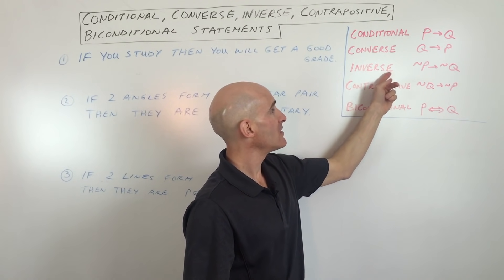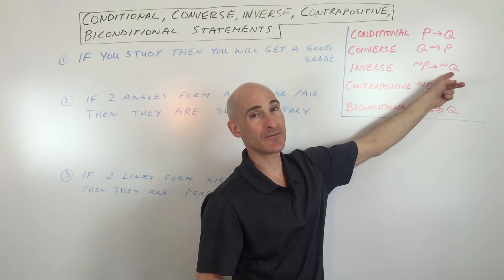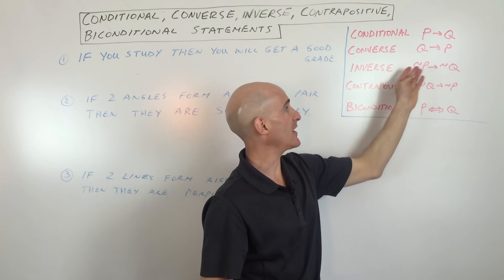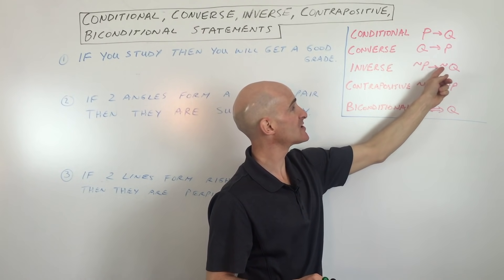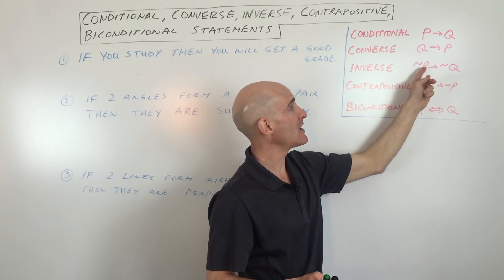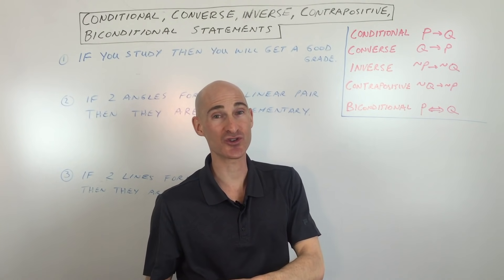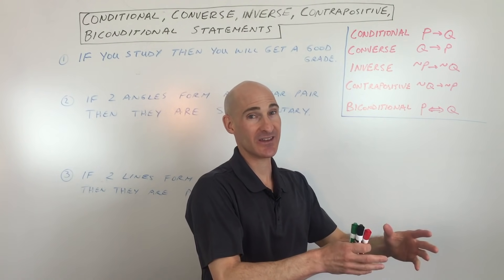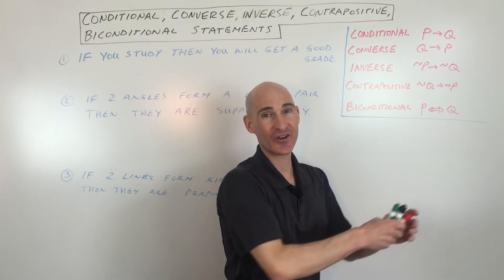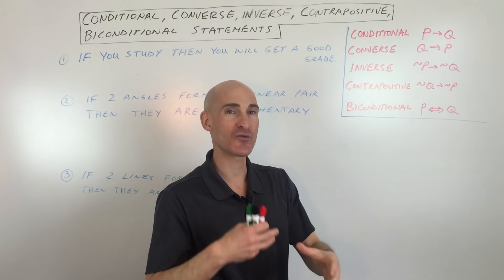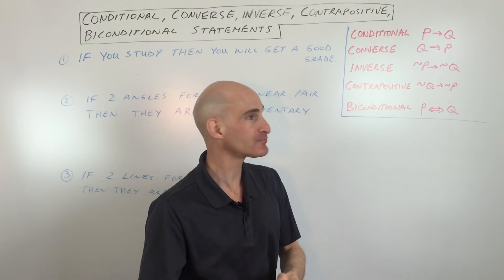With the inverse, you keep the hypothesis and the conclusion in their same spots — if P, then Q — but you negate both the hypothesis and the conclusion. You're saying not P, then not Q. When you add the word 'not,' you're making it the opposite — you're negating it.